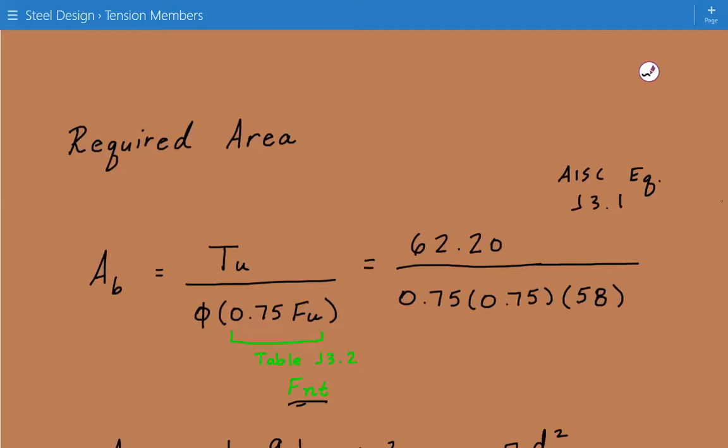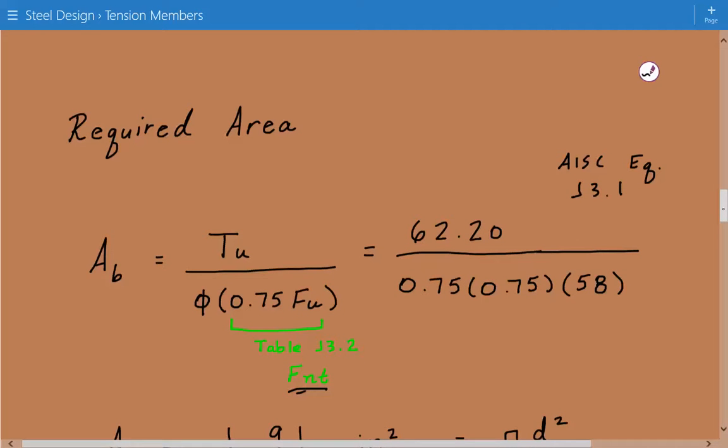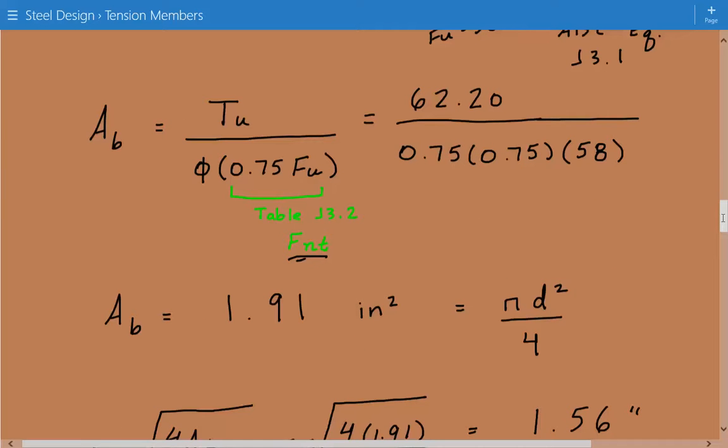And so we plug in the numbers. So our design tensile loading was 62.2 kips divided by 0.75 times 0.75 times 58. And maybe I didn't mention this earlier, but A36 steel, the yield is 36 ksi, and the ultimate strength is 58 ksi.